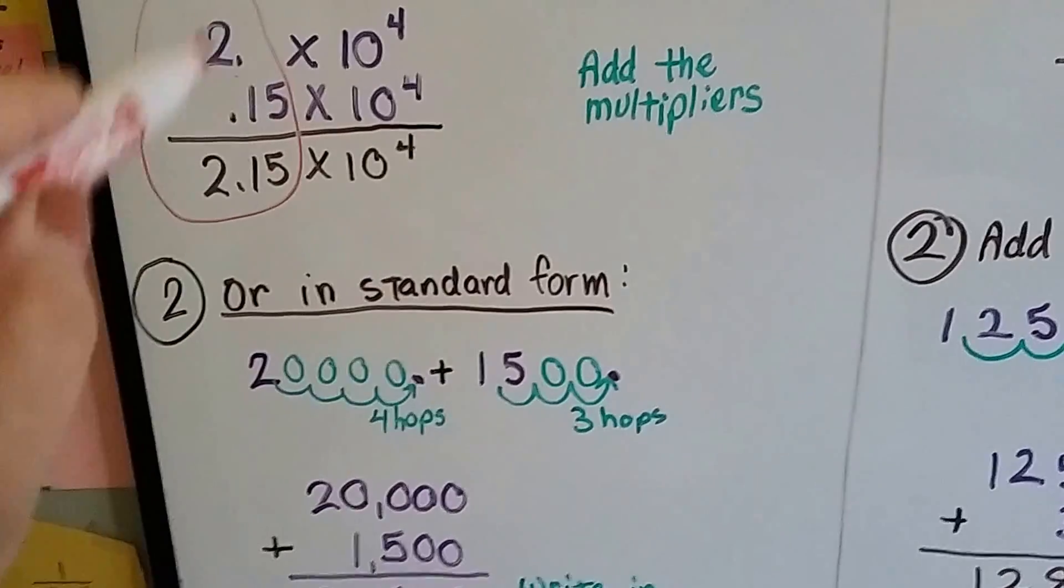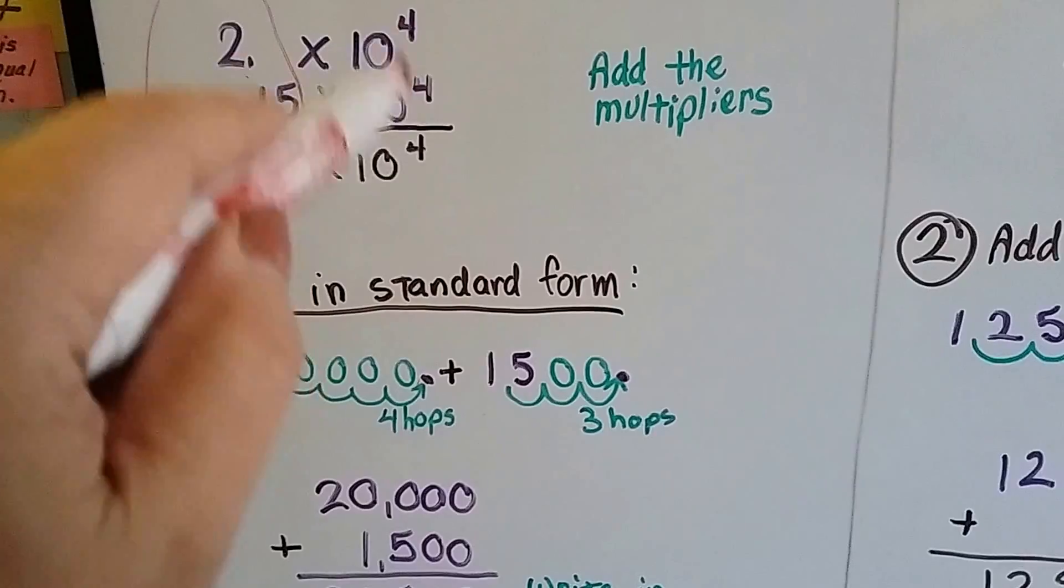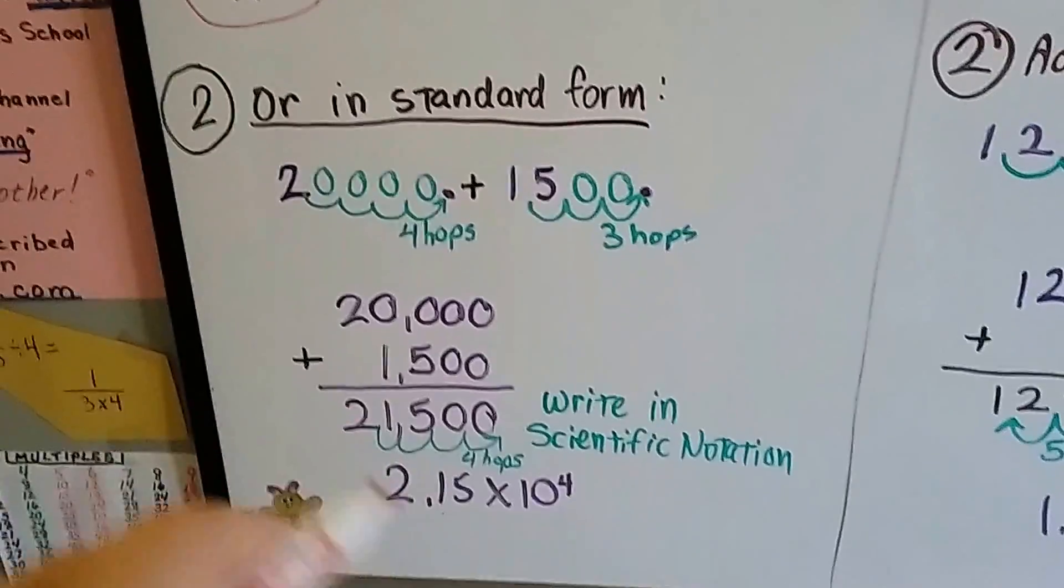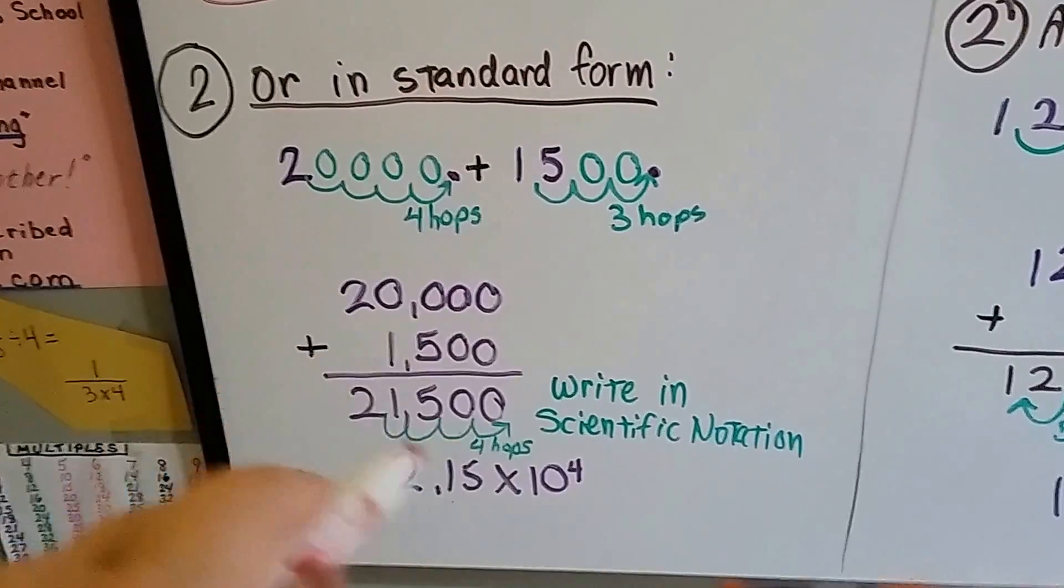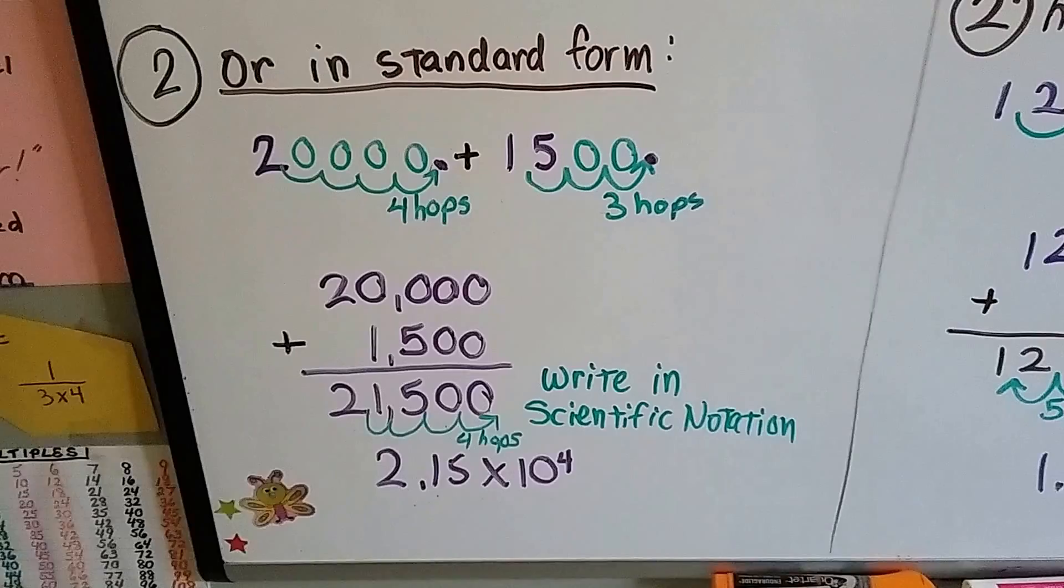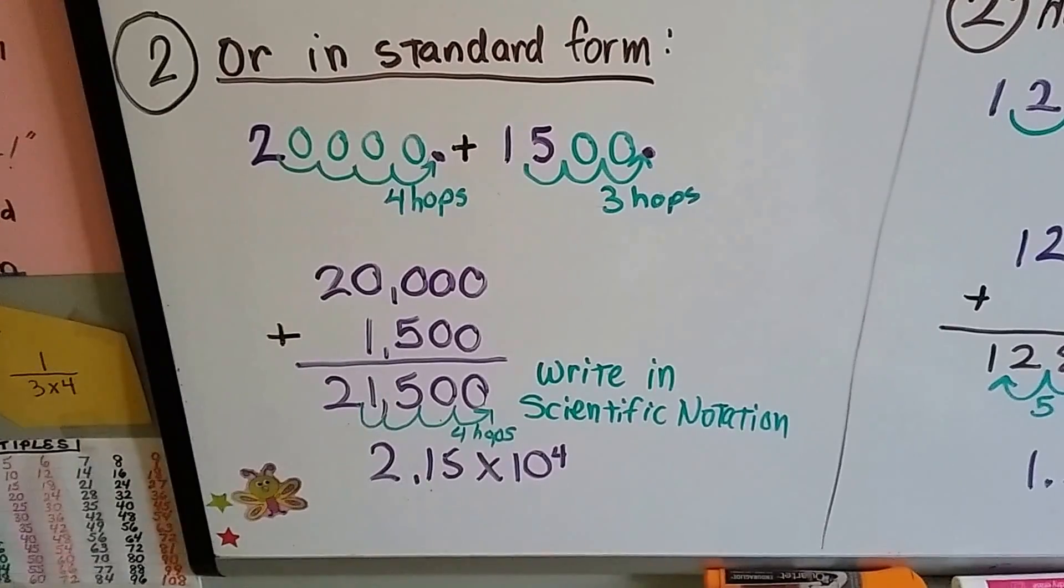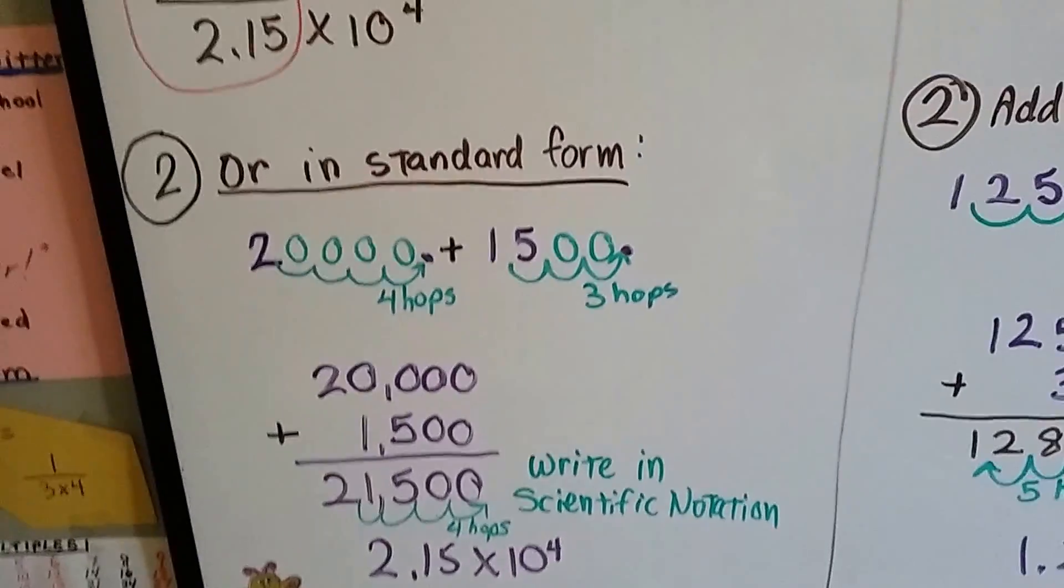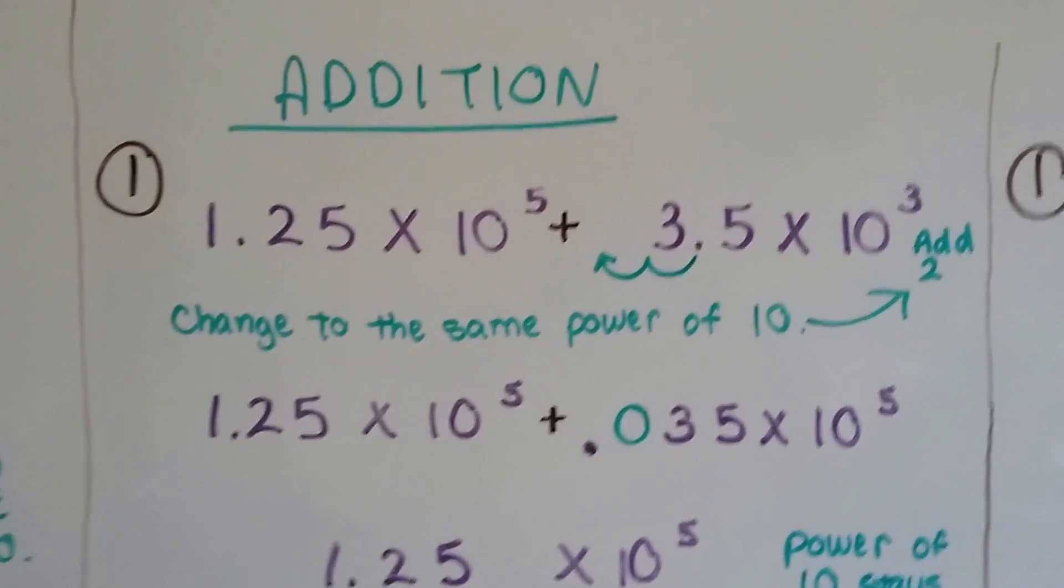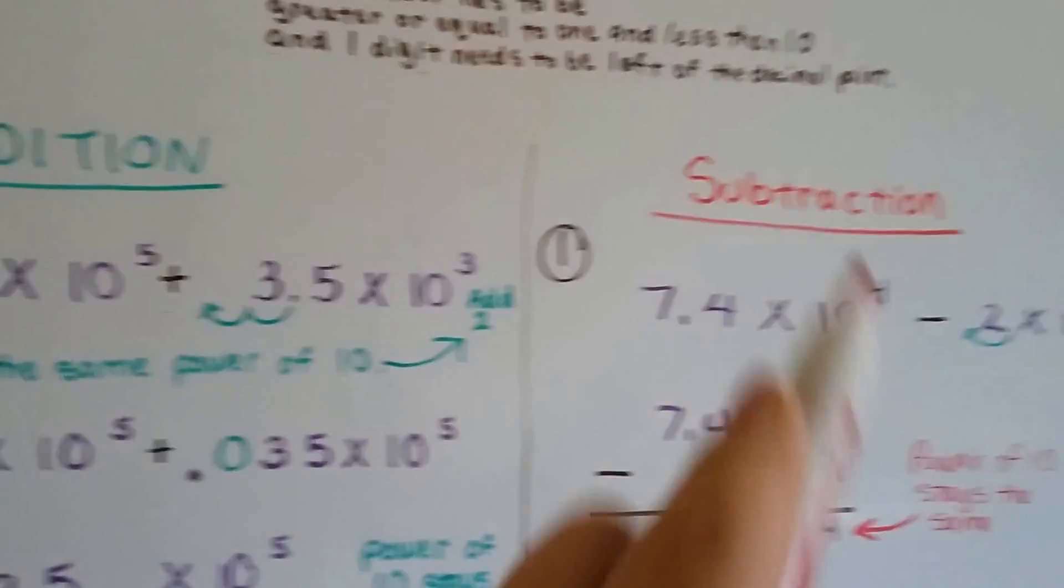So you can do it directly this way by adding the multipliers as long as the powers of 10 are the same, or you can expand both of them, add them, and then put them back into scientific notation. It doesn't matter which way you do it because they're both going to come up with the correct answer. So let's do it one more time, and then I'll show you subtraction.